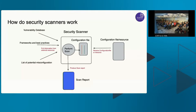You give the security scanner a resource to scan for misconfigurations, and it produces a scan report showing everything that went wrong. It checks things like: if you use certain package versions, is there a known vulnerability? For misconfigurations, it checks whether you've defined a specific version for your container image — best practice says you should. If the check passes, great. If not, it fails and that failed check appears in the scan report.